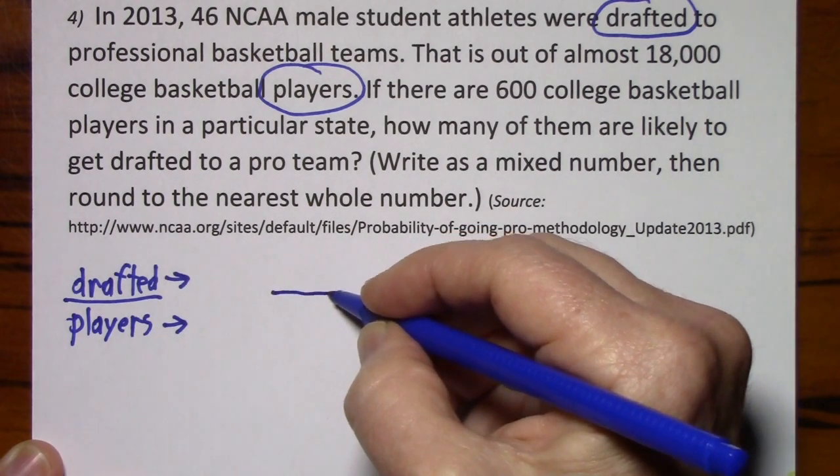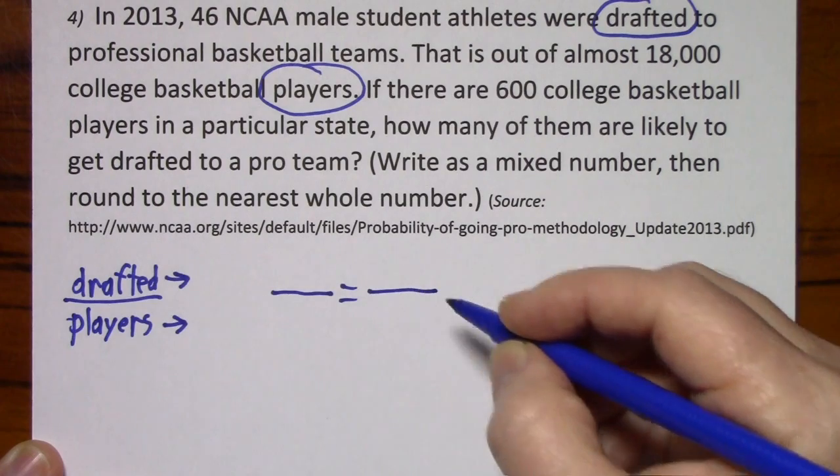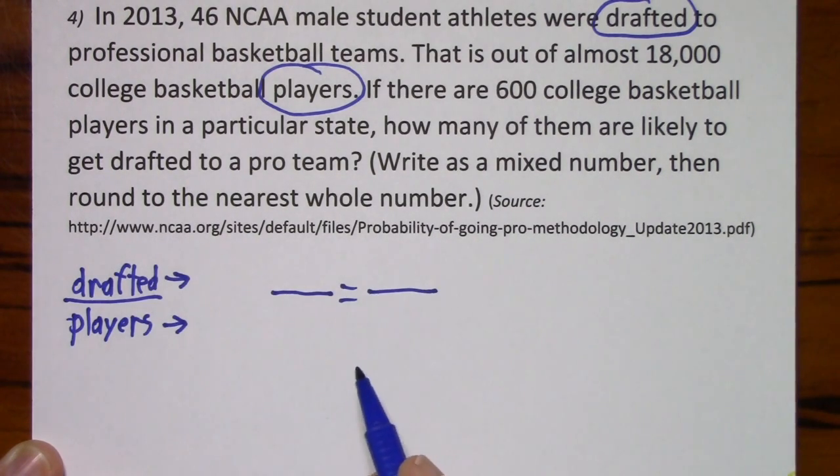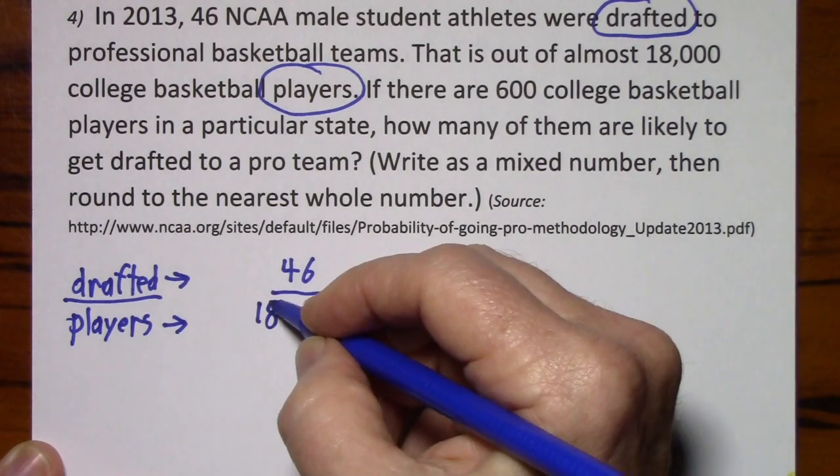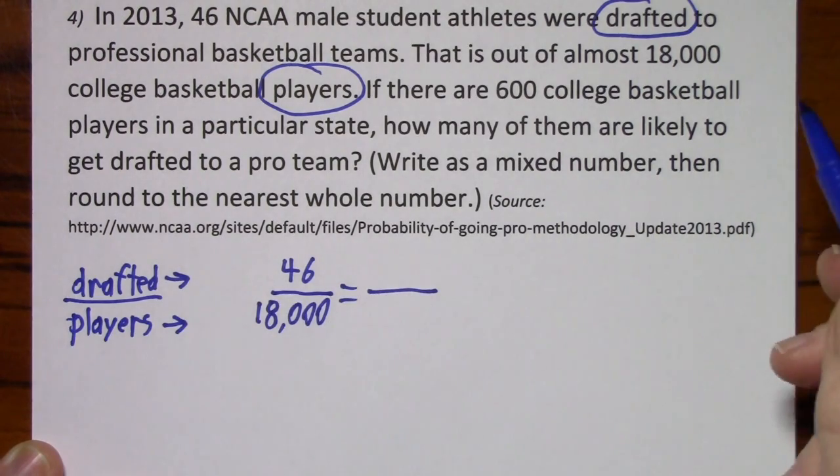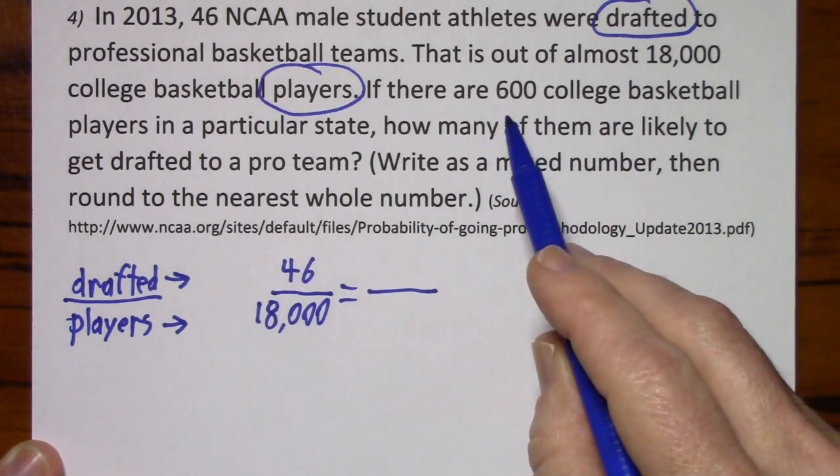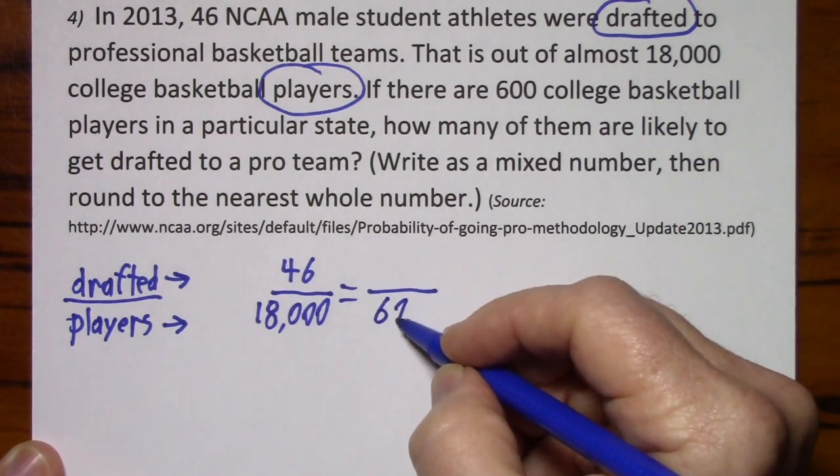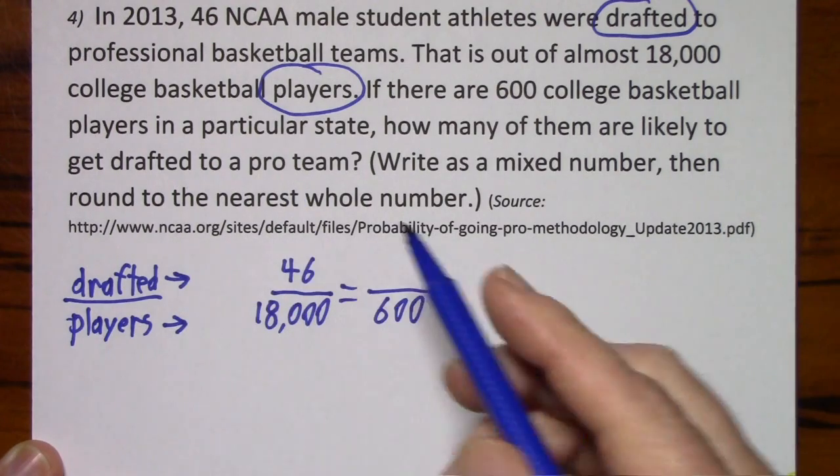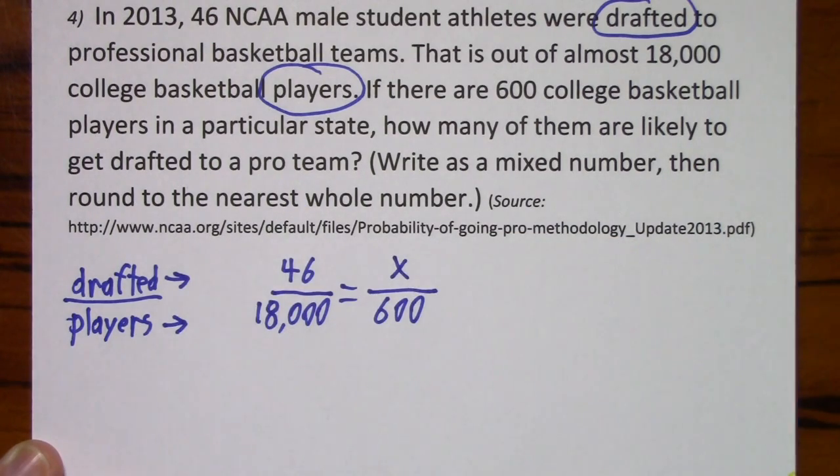I give myself some room if I want to do any canceling, and now just fill in the values. We had 46 drafted out of 18,000 players. So if your state has 600 players, how many are likely to get drafted. We've set up our proportion, all we have to do is solve for x. To get x by itself, just get rid of 600.